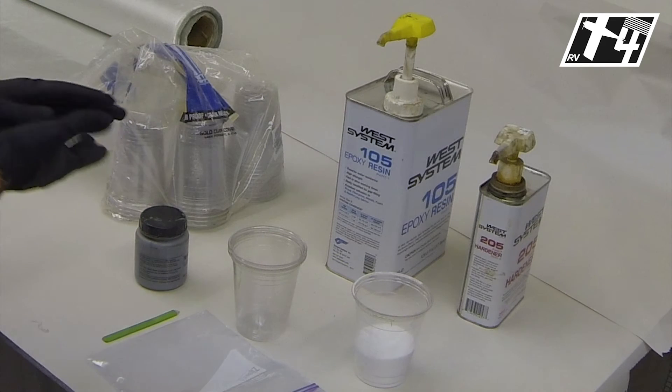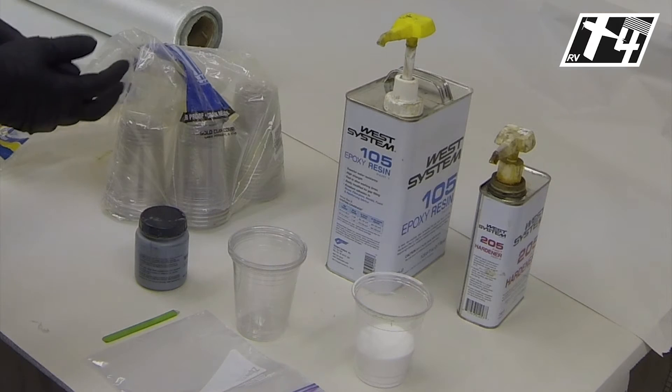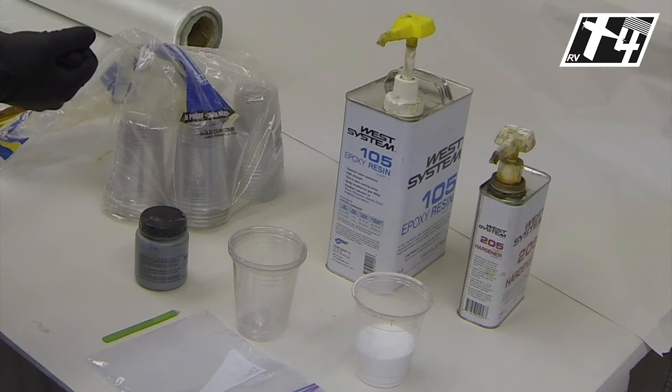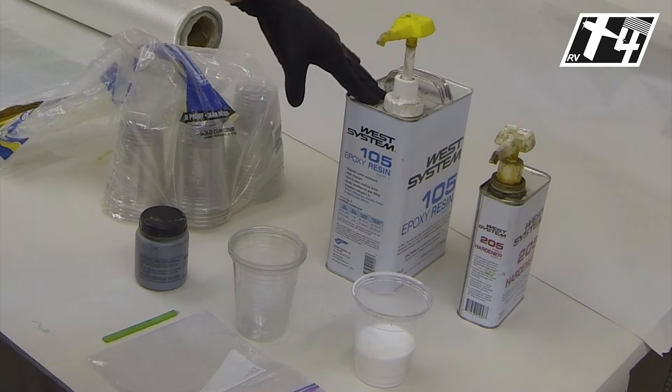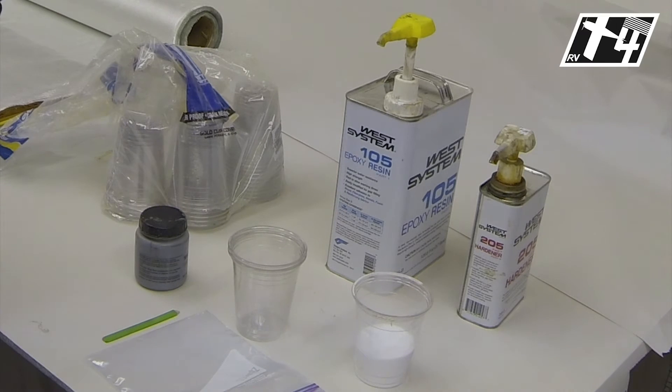We're ready to mix up our epoxy micro balloons mixture that we're going to use for filling the void at the base of the windscreen area. We use West Systems epoxy resin and hardeners. There's a lot of different epoxies that are popular and whatever is locally available to you would be totally acceptable. This one's popular. It is available at a lot of the bolt supply places that you can buy materials and parts from. So for most people it should be generally available.